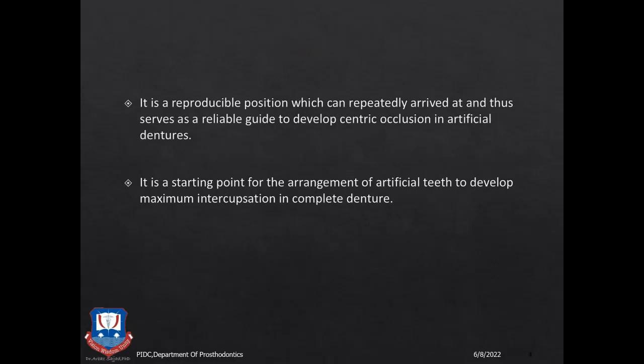Centric Relationship is a reproducible position which can be repeatedly arrived at, and thus serves as a reliable guide to develop Centric Occlusion in artificial dentures. It is a starting point for the arrangement of artificial teeth to develop maximum intercuspation in complete dentures.